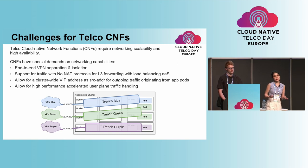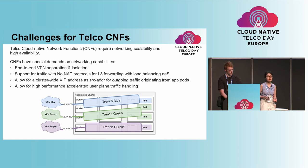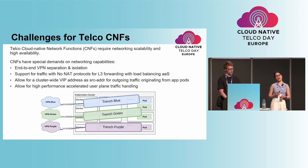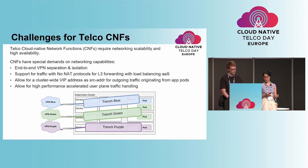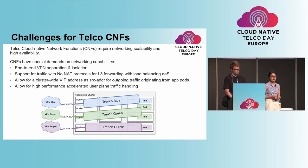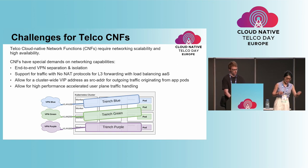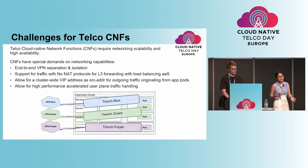Another important requirement is to allow for a cluster-wide VIP address as a source address for outgoing traffic originating from application pods. Last but not least, to allow for high-performance accelerated user-plane traffic handling. Those typical telco requirements cannot easily be solved within the constraints of Kubernetes primary networking.